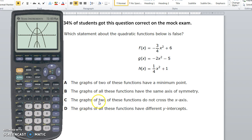The graphs of two of these functions do not cross the x-axis. This graph right here never crosses the x-axis, because here's the x-axis. So this graph never crosses, and then this graph also never crosses. The only graph that crosses that x-axis is this one right here.